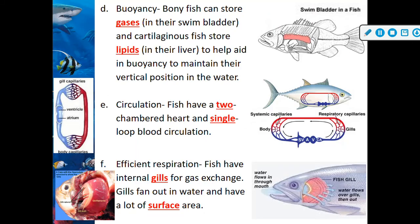Regarding buoyancy: bony fish can store gases in their swim bladder, and cartilaginous fish store lipids in their liver. Your cartilaginous fish are your skates, rays, and sharks. This helps aid in buoyancy to maintain their vertical position in the water.